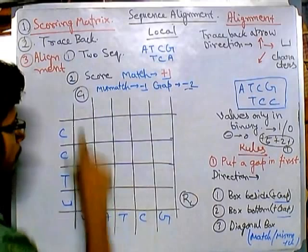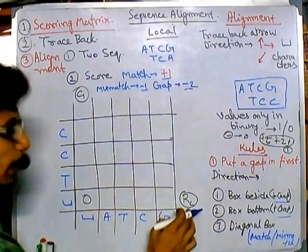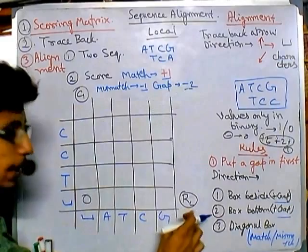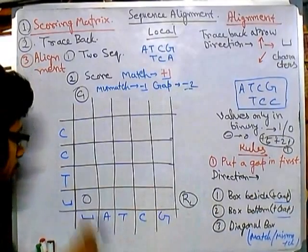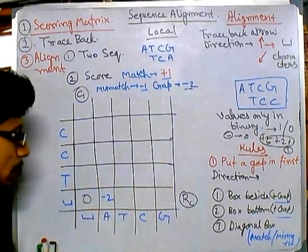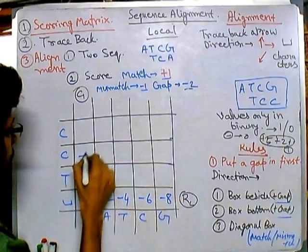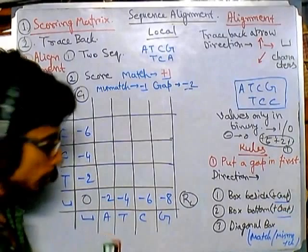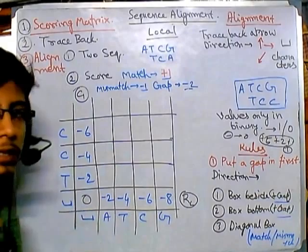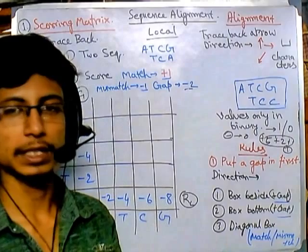Adding gap values: 0 plus −2 is −2, then −4, −6, −8; similarly −2, −4, −6. Now here is the uniqueness of the local alignment system: all the values we are getting for the first row and column are in the minus range. As I explained, local alignment only understands binary — if a value is negative place 0, if positive place 1.